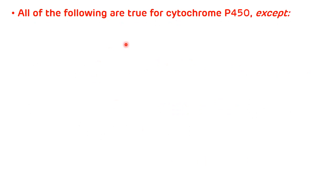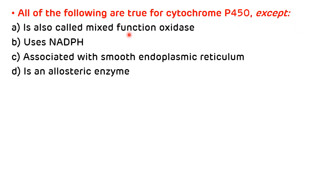Now we will see some multiple choice questions. All of the following are true for cytochrome P450 except: A) it is also called a mixed function oxidase, B) it uses NADPH, C) it is associated with the smooth endoplasmic reticulum, D) it is an allosteric enzyme. It is called a mixed function oxidase, it utilizes NADPH, and it is associated with the smooth endoplasmic reticulum — but it is not an allosteric enzyme; it is an inducible enzyme. The correct answer is D.